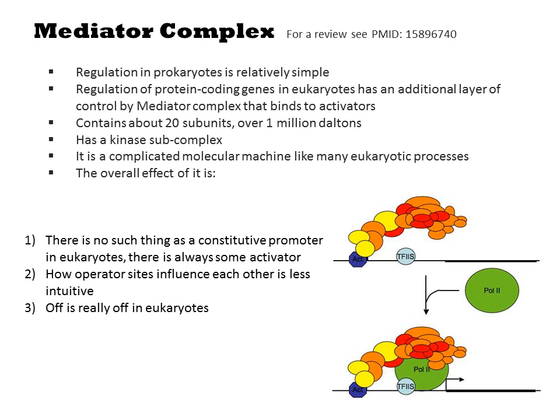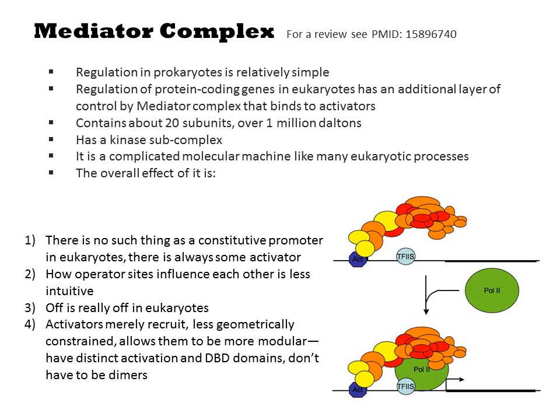One useful artifact of this is that 'off' is really off in eukaryotes. It is often easier to express really toxic genes in eukaryotes than in prokaryotes, where leaky transcription is the norm. The activators merely recruit mediator, and transcription initiation is more of an active process than a spontaneous one. This allows eukaryotic transcription factors to be more modular and diverse — they typically have distinct activation and DNA binding domains, and they don't have to be dimers.